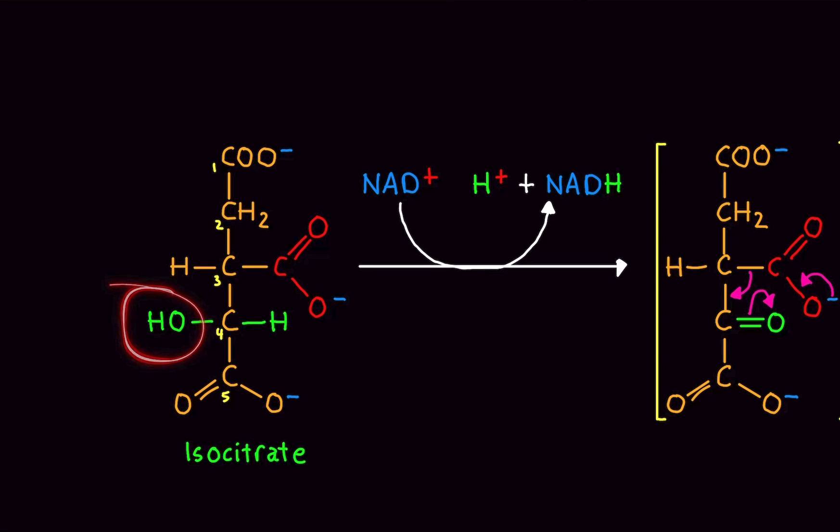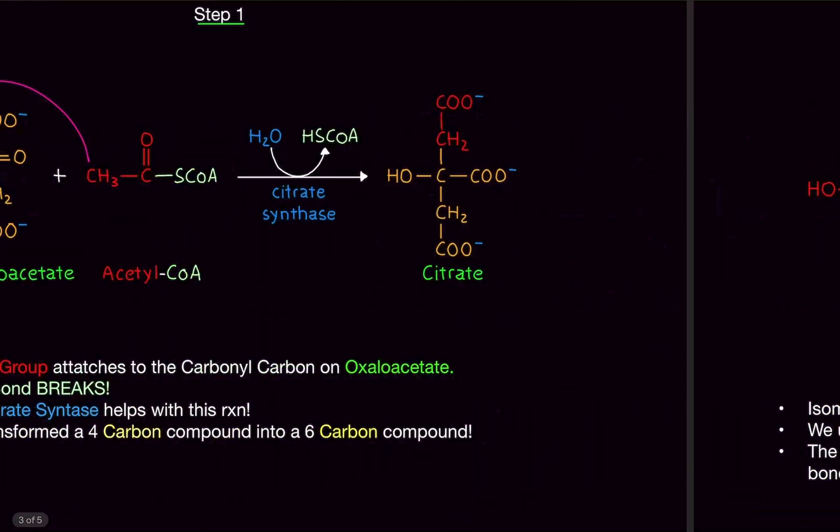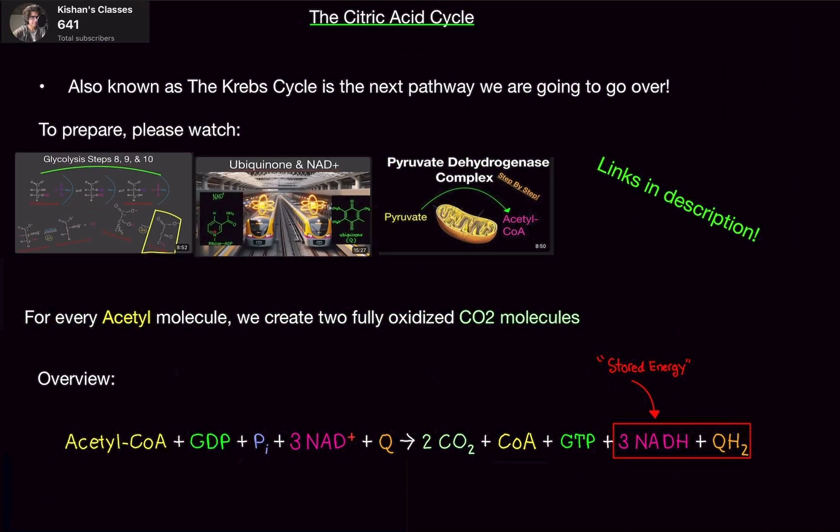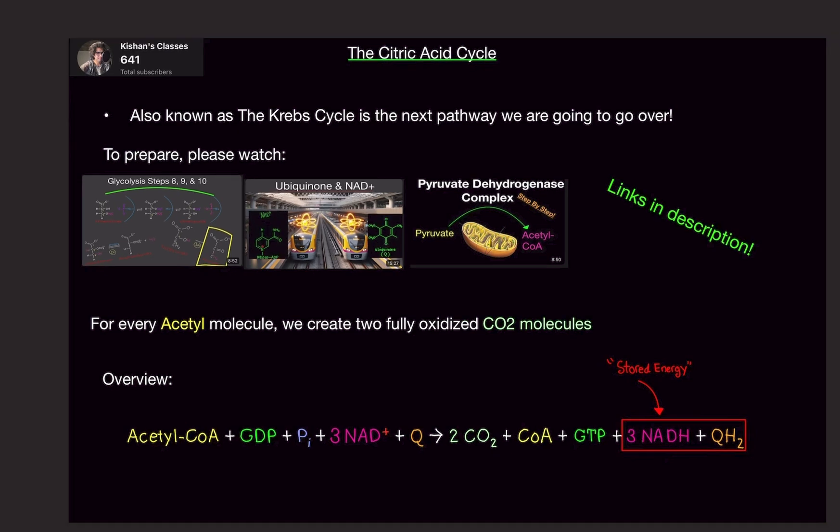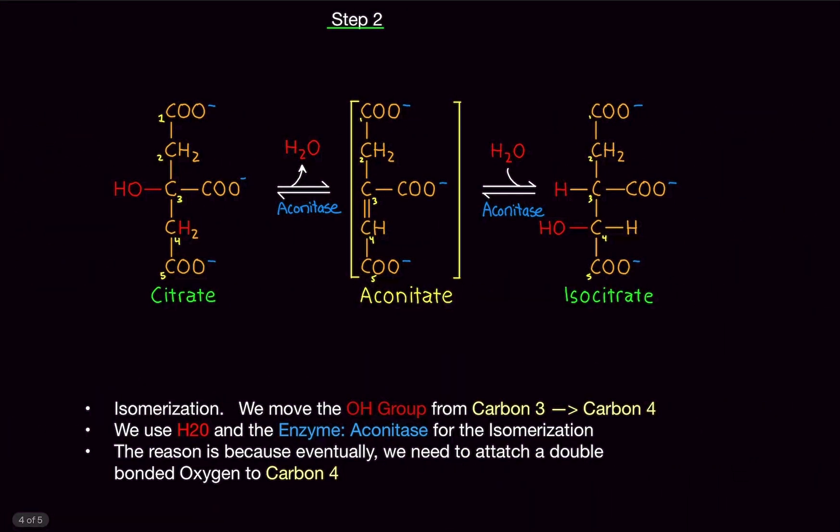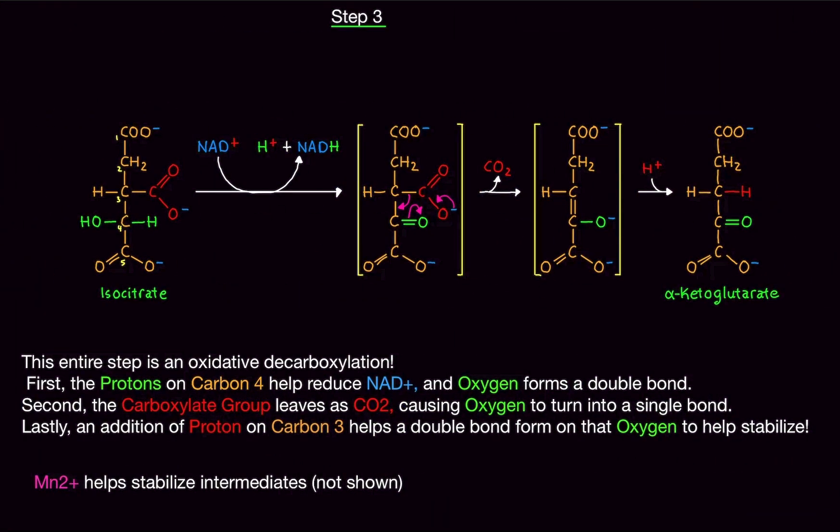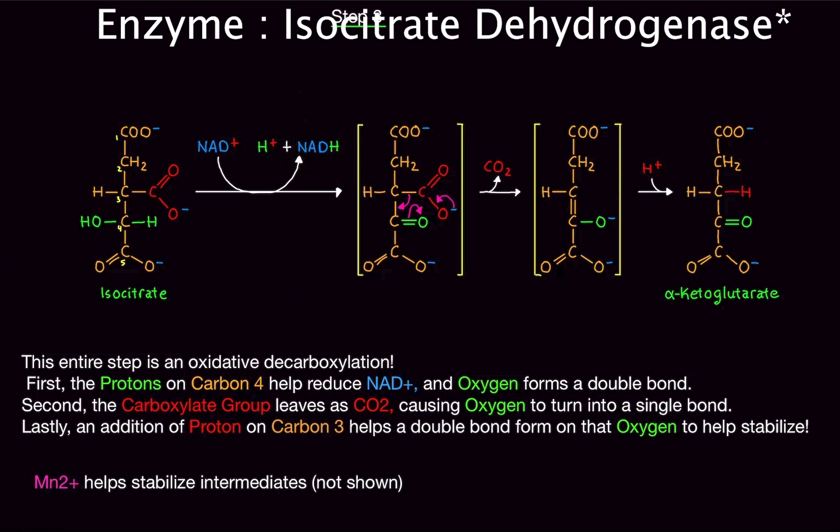The hydroxyl group here and the proton here from carbon four is going to attach to NAD plus fully reducing it. So now we have NADH plus H, right? NADH plus H. Okay. So we just cashed in, right? Because remember the overview here? Right. The three NADH molecules, we just cashed in one of them, right? The bank. Okay. This is going to float away and go to the electron transport chain later.